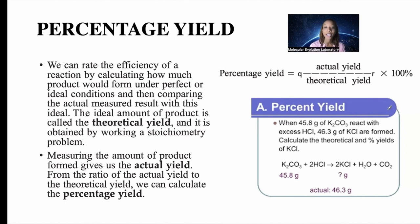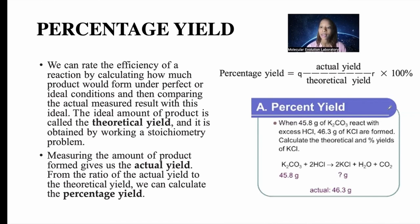The next important calculation is percentage yield. We rate the efficacy of a reaction by comparing the theoretical yield — the ideal amount of product under perfect conditions — with the actual measured result. The ideal amount of product is the theoretical yield, obtained by working a stoichiometry problem. The measured amount of product formed is the actual yield. Percentage yield = (actual yield / theoretical yield) × 100%.